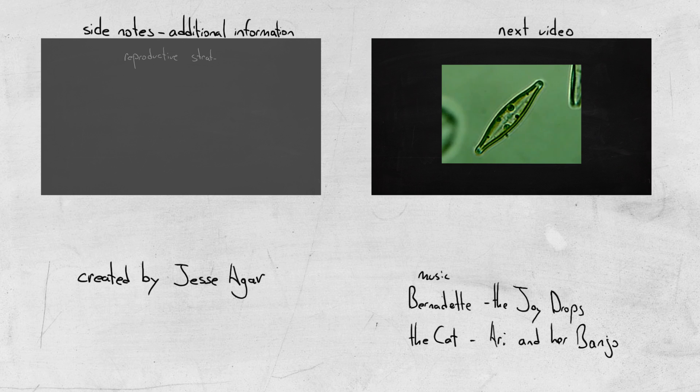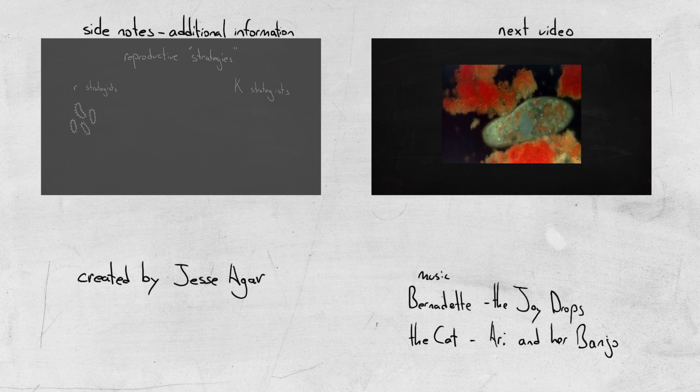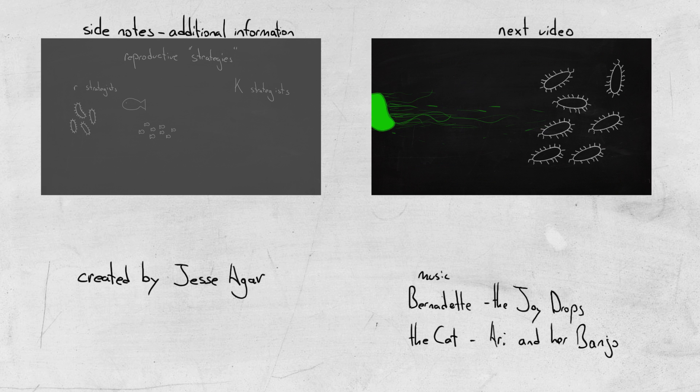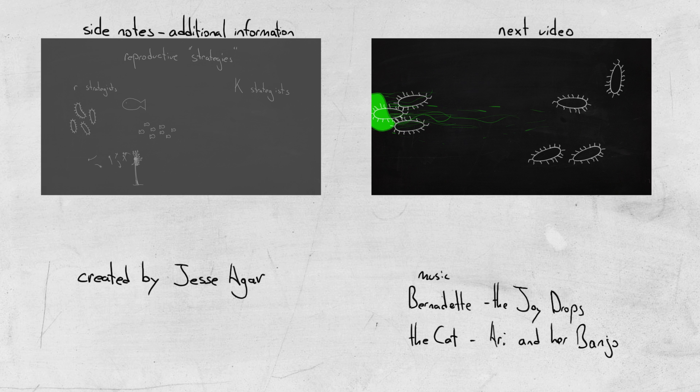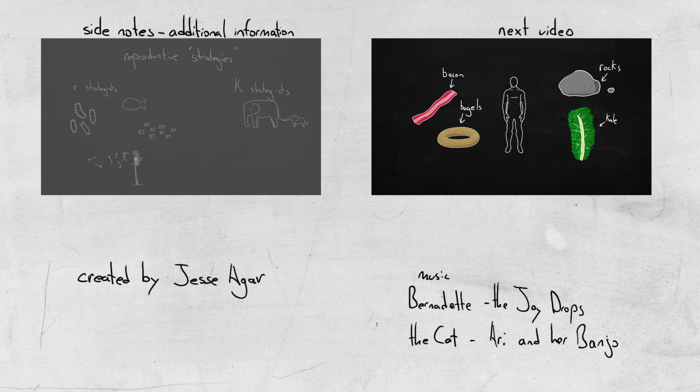Things without brains tend to have less involved behaviors. Things along the lines of if not a certain chemical, then follow a certain chemical. So instead of it being a matter of things that followed that chemical left behind more copies than things that did not follow that chemical, things with brains can learn in one lifetime which chemicals to eat and which to leave alone.